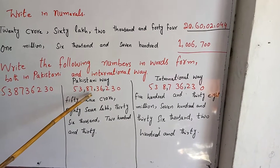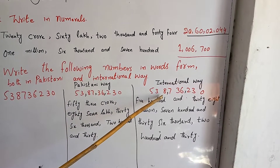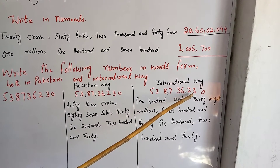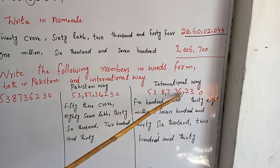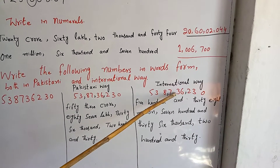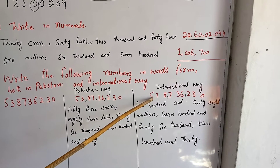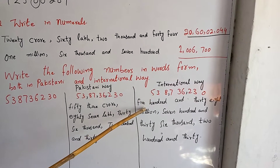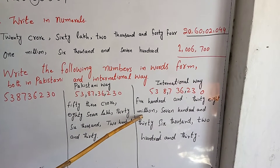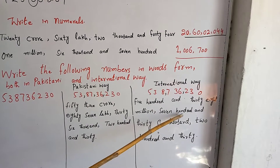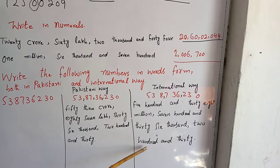In the Pakistani way, I placed a comma after 2-2 values. In the international way, we place a comma after 3-3 values. So: ones, tens, hundreds, thousands, ten-thousands, hundred-thousands, million, ten million, hundred million. The number in international way reads: five hundred and thirty-eight million, seven hundred and thirty-six thousand, two hundred and thirty.